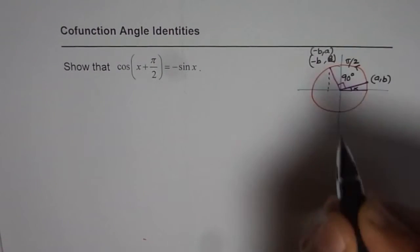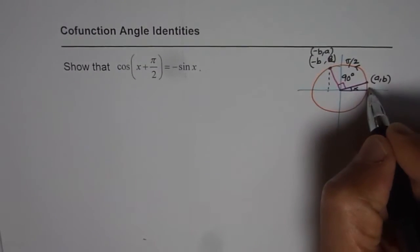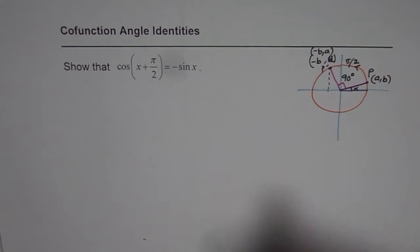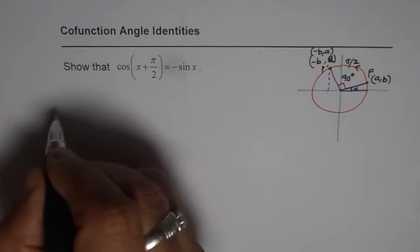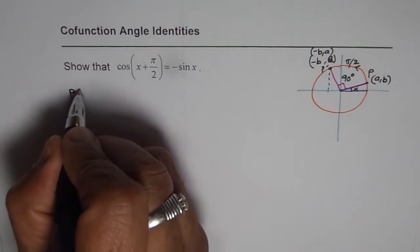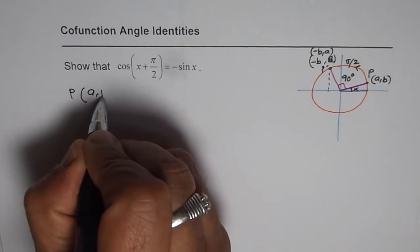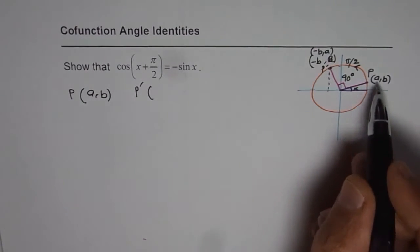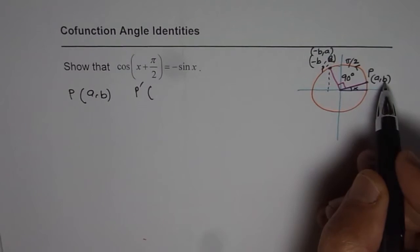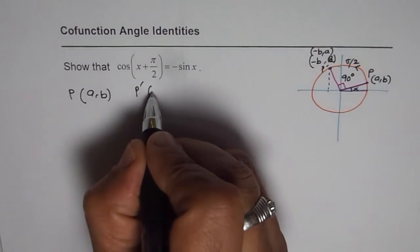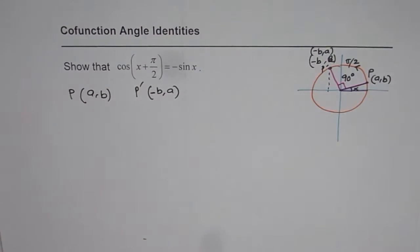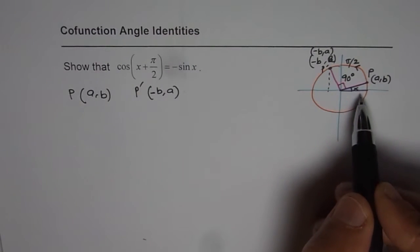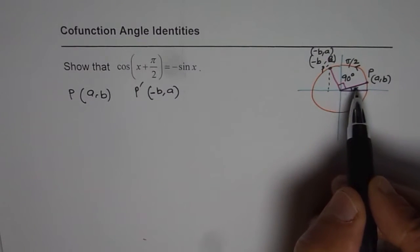Minus B and A are the coordinates of this point. Let me call this point as P, then this image is P dash. So what we see here is that the coordinates of point P are AB, then P dash coordinates are A becomes the y value and B becomes the negative x value, so minus B. So that is how we see that the coordinates get transformed when we do rotation of 90 degrees counterclockwise.